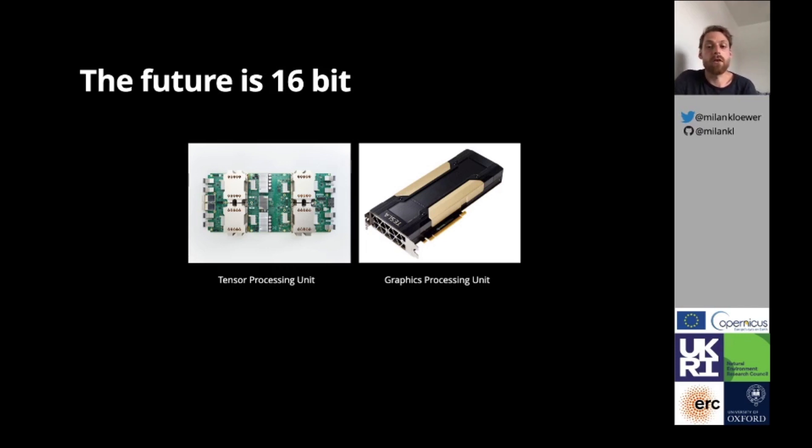Many chip designers now develop processors that allow for less than 32-bit precision, mostly for machine learning applications. Machine learning and climate simulation have something in common. Both allow for imprecise calculations in large parts of the algorithms without a decrease in accuracy.